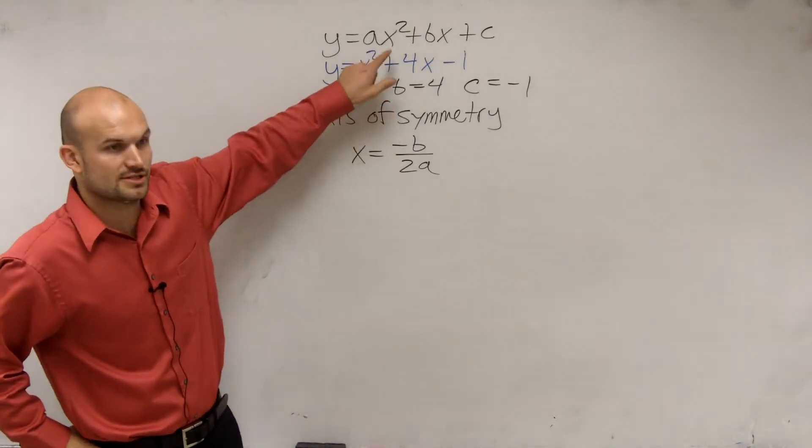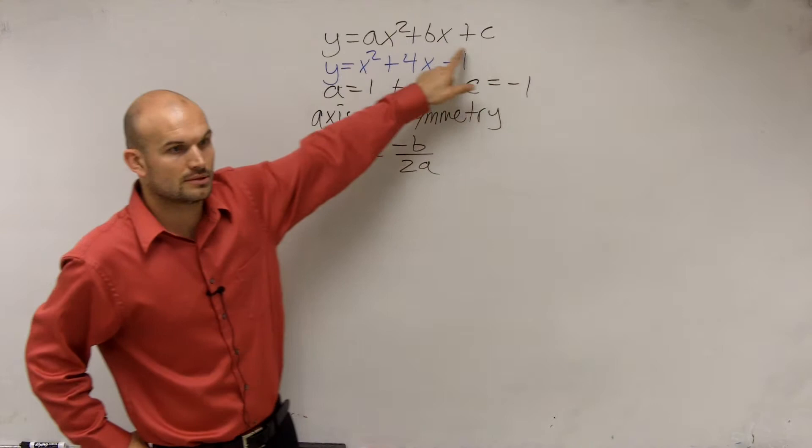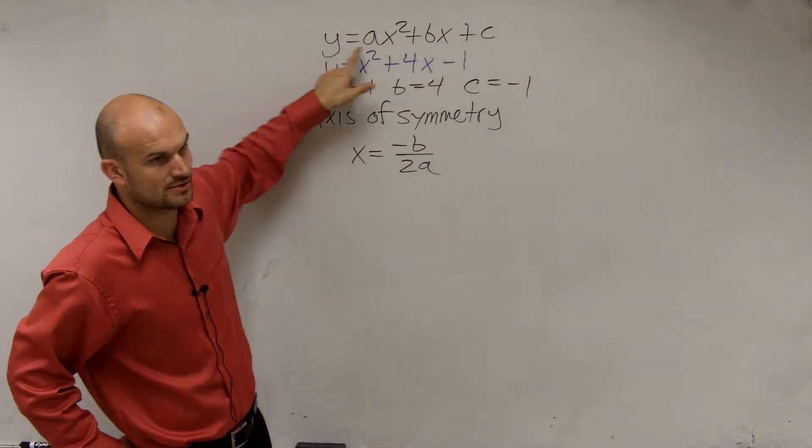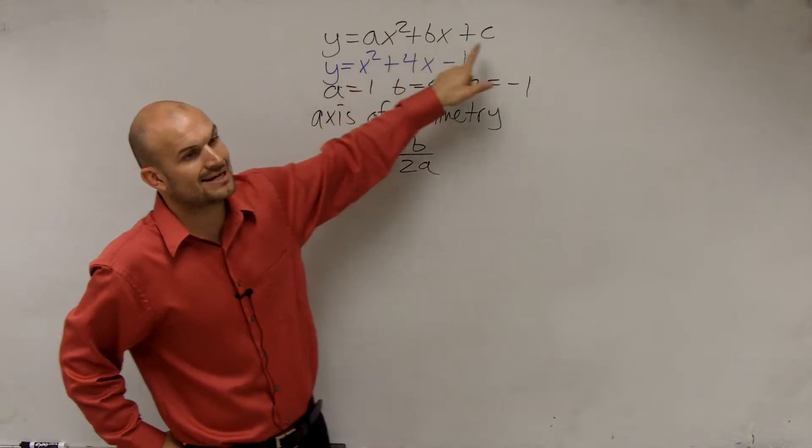So do you follow? This is the quadratic equation. This is all quadratics. All quadratics that make a parabola come in that equation. Therefore, you have an x squared, an x, and a constant.